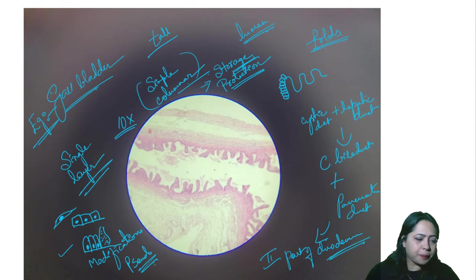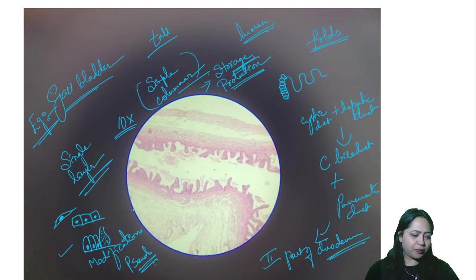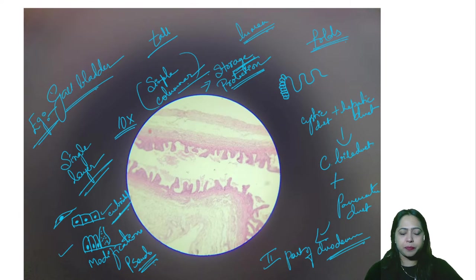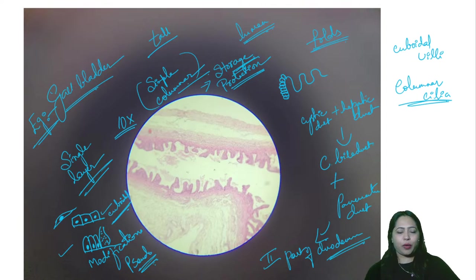We have Satnika Chatterjee, Murali, Abhishek, and Shiv Bahadur Chaudhry joining. Regarding villi: in the gallbladder there are no villi. Villi would be present with cuboidal epithelium, while columnar epithelium will have cilia, not villi. So to remember: cuboidal will have villi, columnar will have cilia.